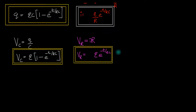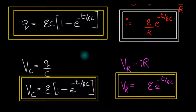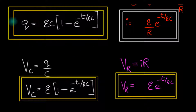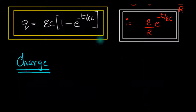Last time we derived these four equations where you understand how the charge, current, and the voltage change with respect to time. These are the transient equations and they look pretty scary. So this episode is trying to make them look less scary. What I'm going to do is try to make you understand the equation for charge and the current intuitively, and the voltage equations will follow accordingly. Let's concentrate on the charge and the current.